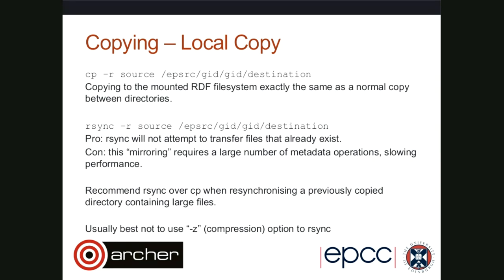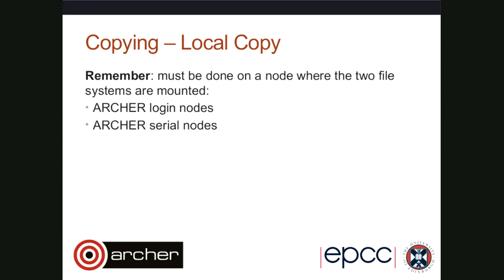If you look up any guides on RSync, they will often tell you to use -z, which turns on compression — and as I said before, this is usually something you don't want. It's also important to remember that copying between Archer and the RDF must be done on a node where both file systems are mounted — that's the login nodes and the serial nodes — and essentially not the compute nodes, service nodes, or data transfer nodes.